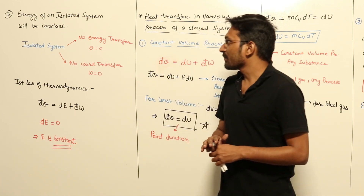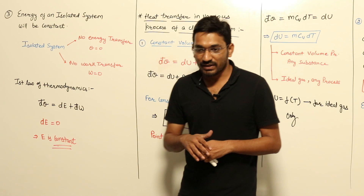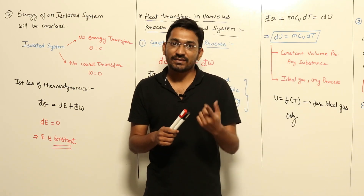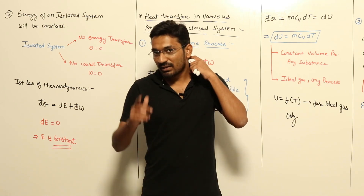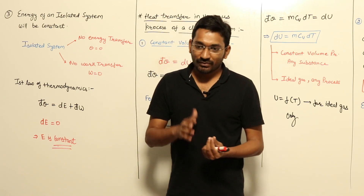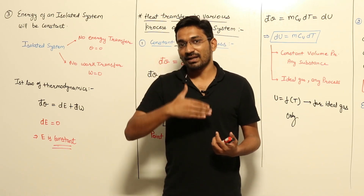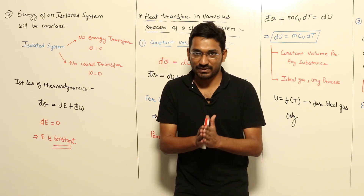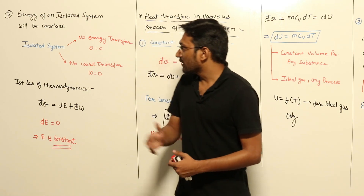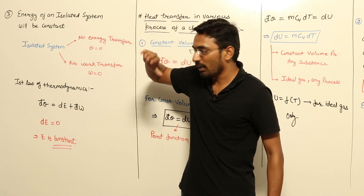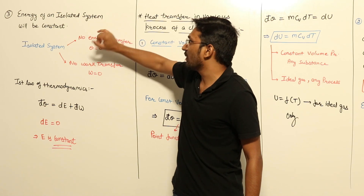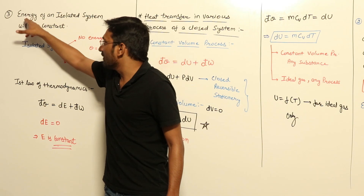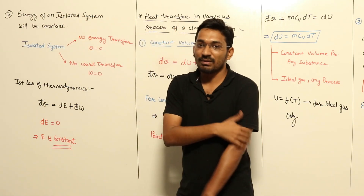The third result of our first law of thermodynamics: we already studied two results. The first result tells us that heat is a path function. The second result gives us that energy is a property of a system. After explaining that energy, we find out the first law of thermodynamics for a process undergoing in a closed system. Now the third point, with respect to an isolated system, the first law of thermodynamics tells us that energy of an isolated system will be constant.